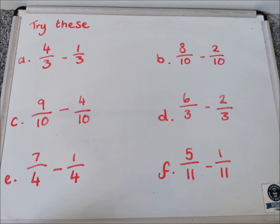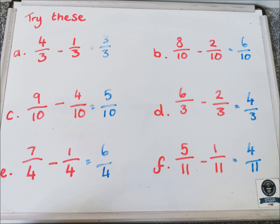Very quickly on to some examples for takeaway this time. Please be careful not to add — you are just thinking about subtraction. Pause the video, take your time going through these, and we'll get some answers in a wee second. Four thirds take away one third is three thirds. Eight tenths take away two tenths is six tenths. Nine tenths take away four tenths is five tenths. Six thirds take away two thirds is four thirds. Seven quarters take away one quarter is six quarters. Five elevenths take away one eleventh is four elevenths.